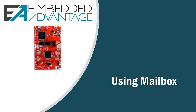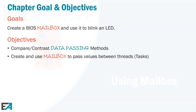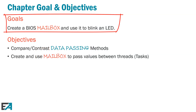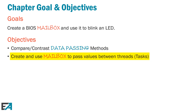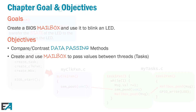Welcome to Chapter 11: Using Mailbox. The chapter has one main goal — to learn about mailboxes, how to create them, and we're going to use that in the lab to blink an LED. The objectives are to look at data passing methods and how to create a mailbox and pass values between threads, basically tasks. So you can actually light an LED with a mailbox — of course you can!